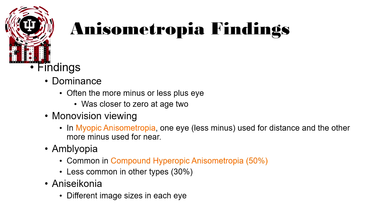Some other findings in anisometropia include dominance — often the more minus or less plus lens is the dominant eye, because it was closer to zero during the developmental years. In myopic anisometropia, one eye, which is less minus, is used for distance, and the more minus eye is used for near. In amblyopia, a common finding is compound hyperopic anisometropia. Anisometropia also leads to something called anisoconia, which we will discuss further.